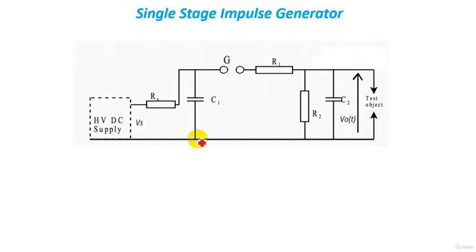Now let's see the circuit of our impulse generator. This circuit consists of first a high voltage DC supply, which is the first step to our single stage impulse generator. High voltage DC supply can be obtained here by using any methods of producing high voltage DC, such as Van de Graaff generators or any rectification methods.